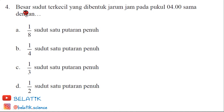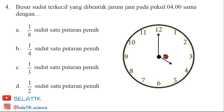Besar sudut terkecil yang dibentuk jarum jam pada pukul 04.00. Untuk soal nomor 4, disini kita buat dulu sketch jam. Jadi untuk jarum pendek disini menunjuk ke angka 4 dan jarum panjang menuju ke angka 12. Ini adalah pukul 04.00. Yang ditanyakan adalah sudut terkecil, yaitu dari angka 12 ke angka 4.